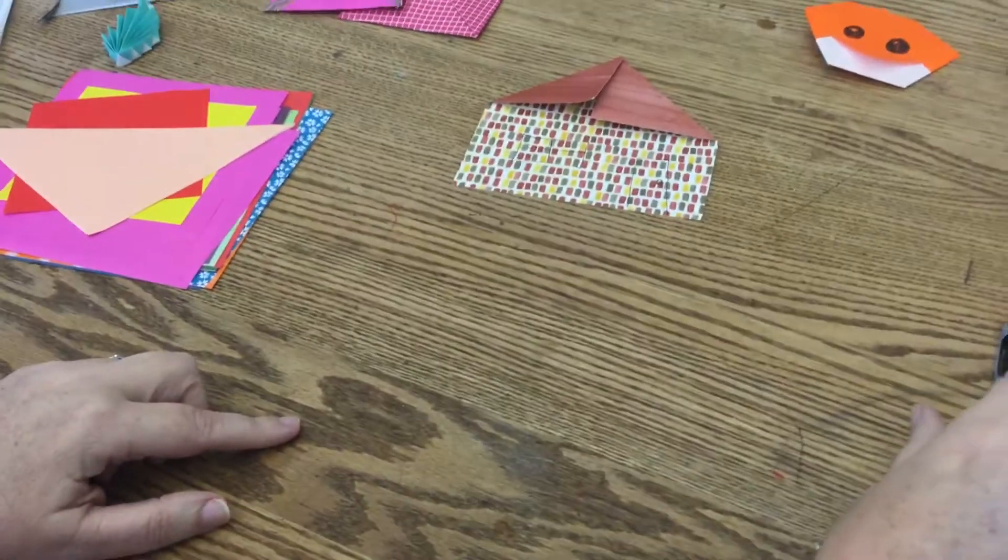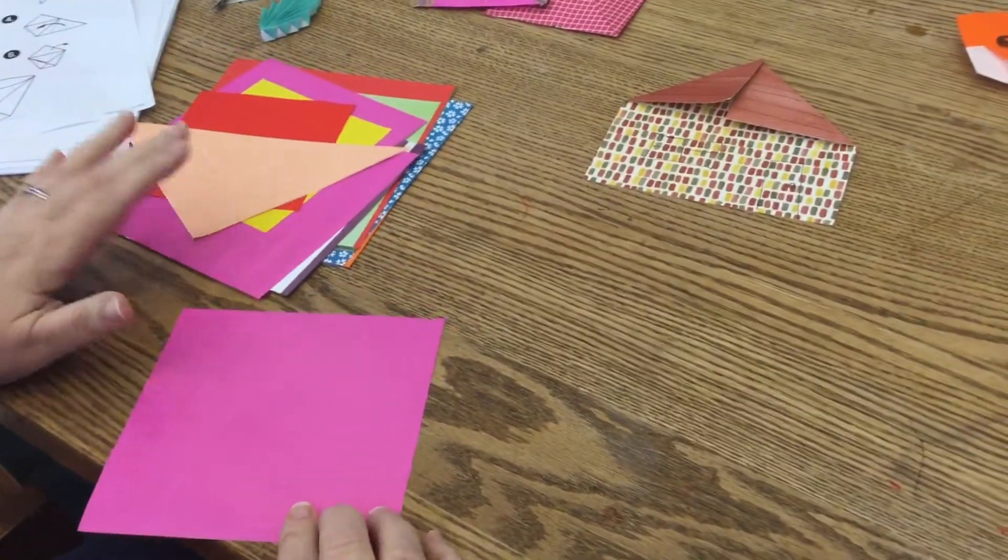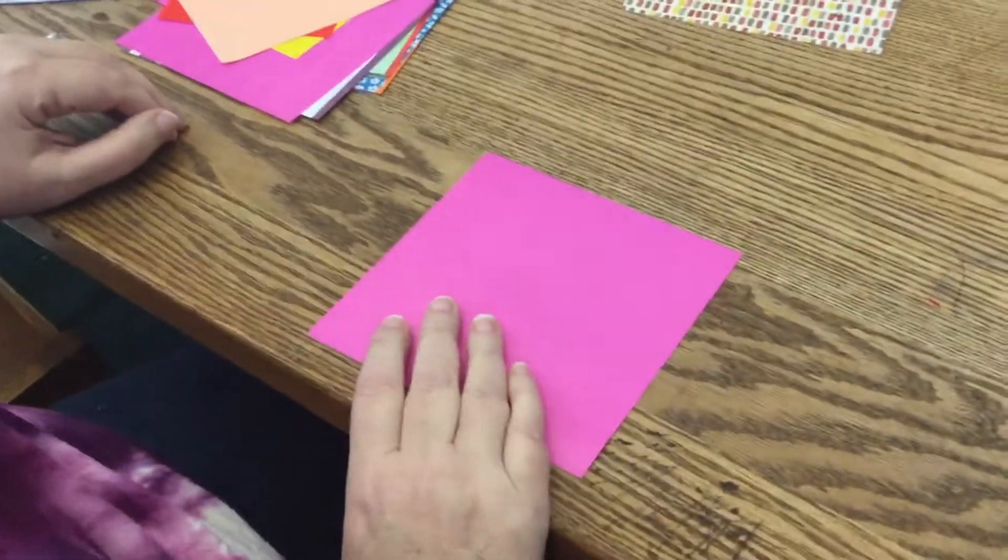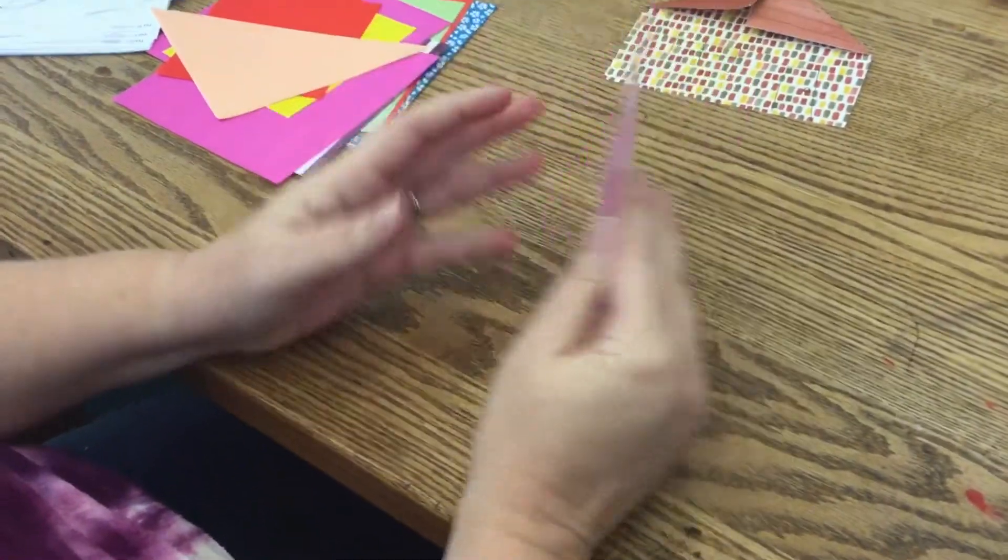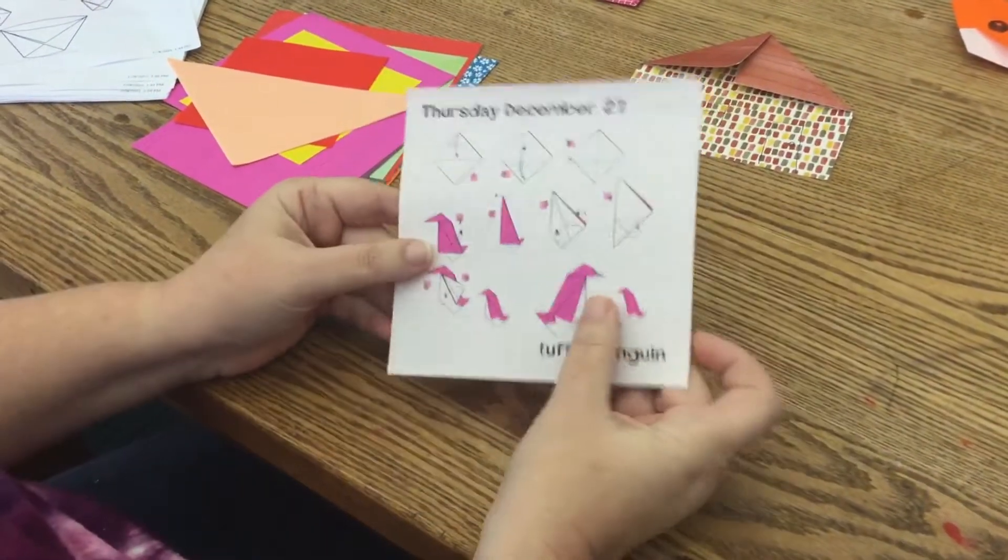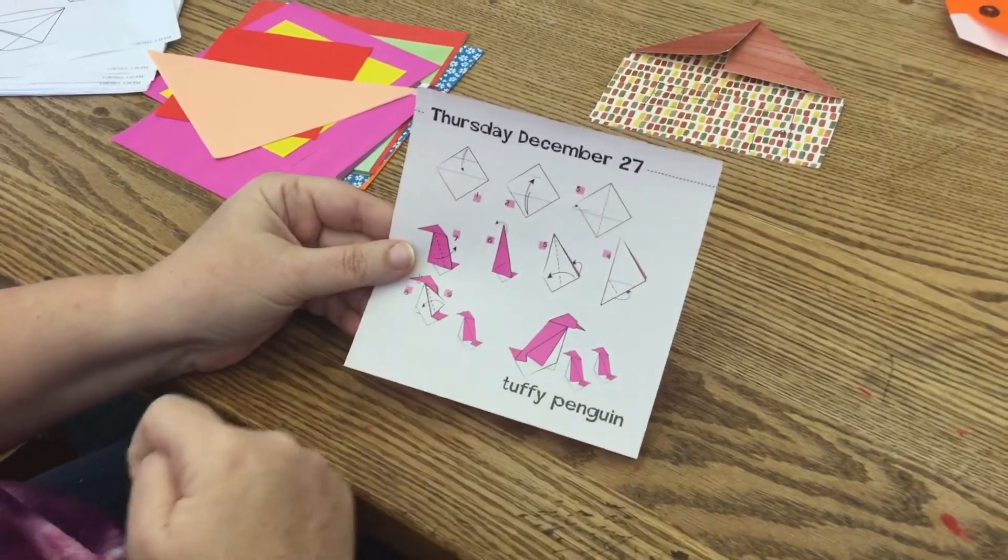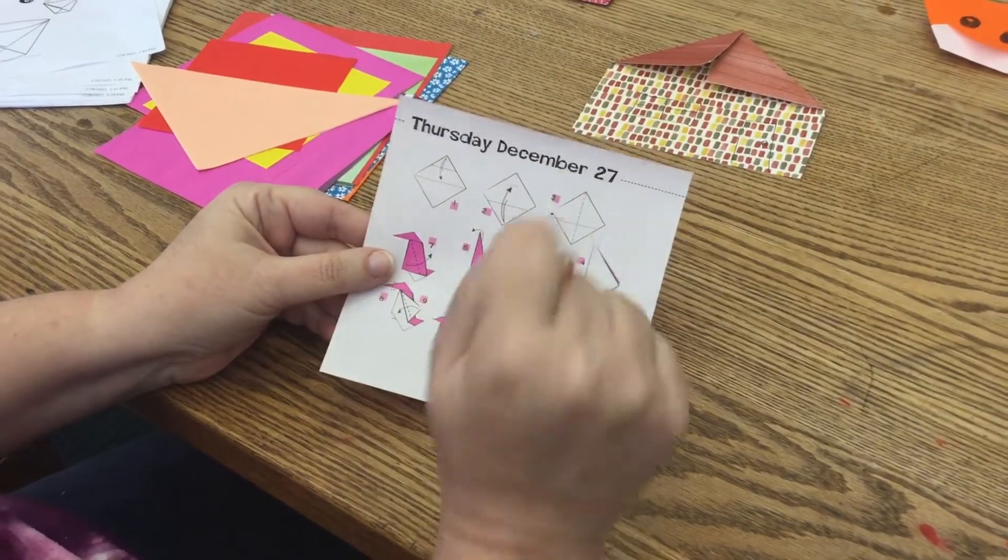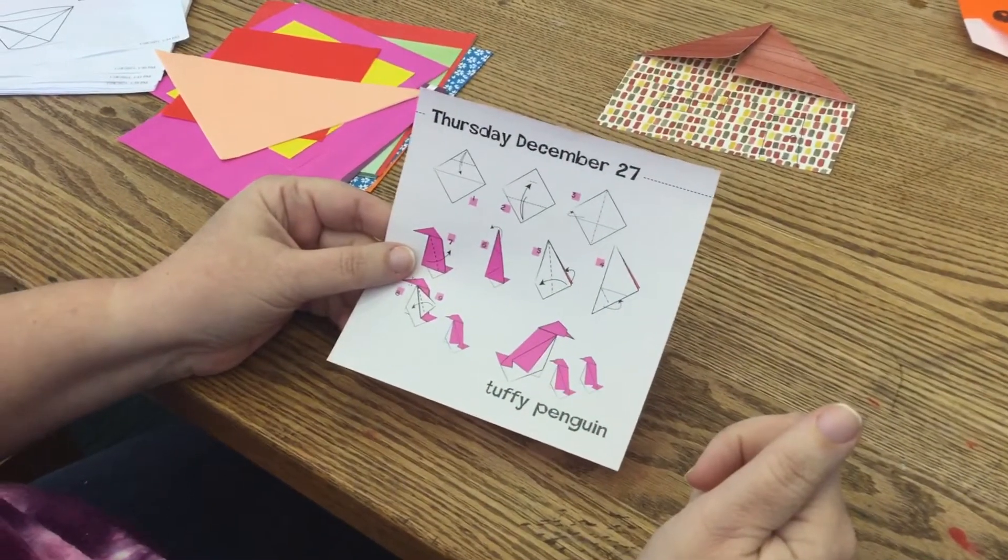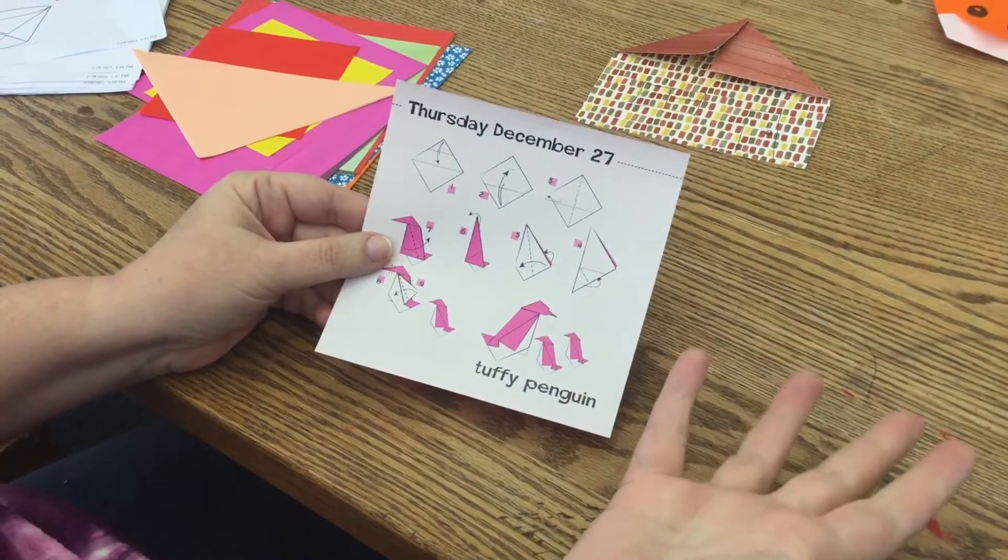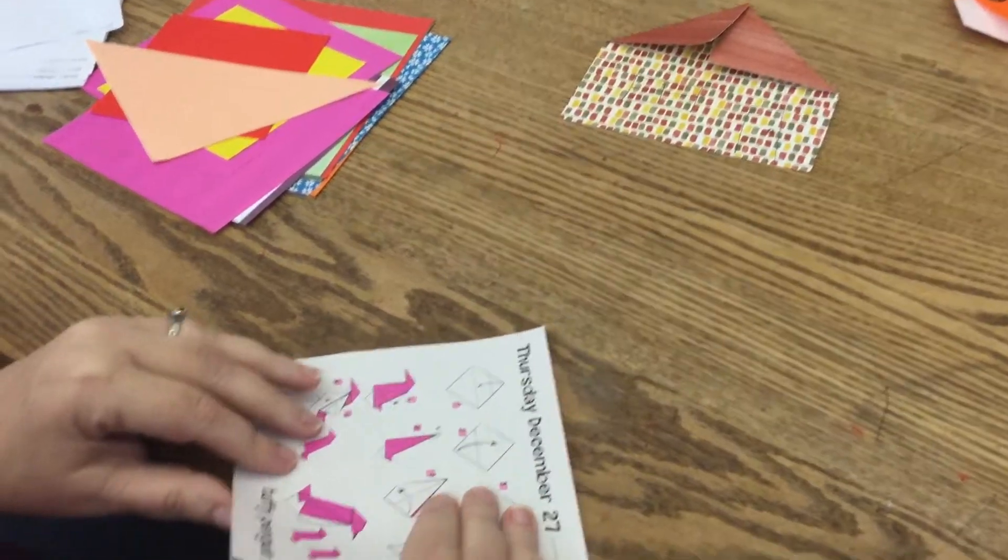So our next project is actually going to be an envelope. We have some special papers in here that came from a calendar, and each piece has another project on it. Like I have Thursday, December 27th. We're not actually going to use this project, but we are using it for the origami paper.